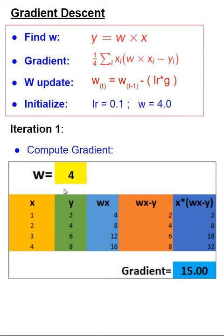Next, let's compute the value of w. The new value of w is calculated as previous known value of w minus learning rate times the gradient. So that happens to be 4 minus 15 times 0.1. So the result is 2.5. The new value of w is 2.50, which is what we will be using in our next iteration.